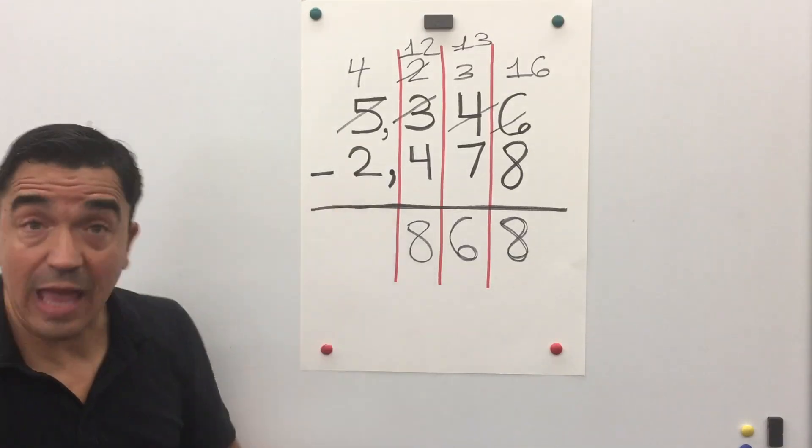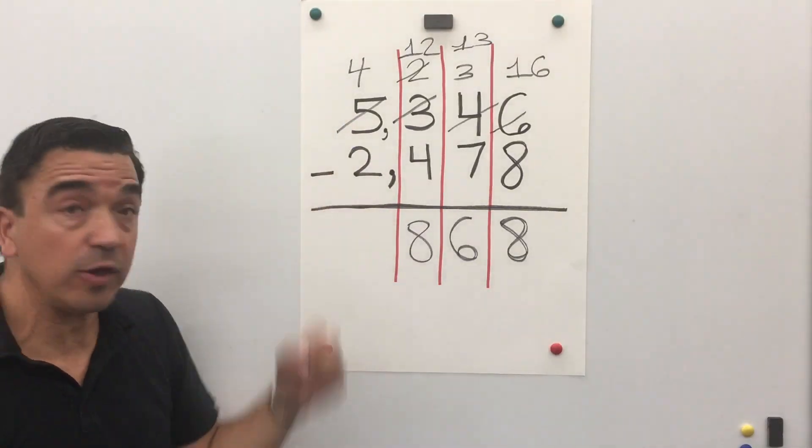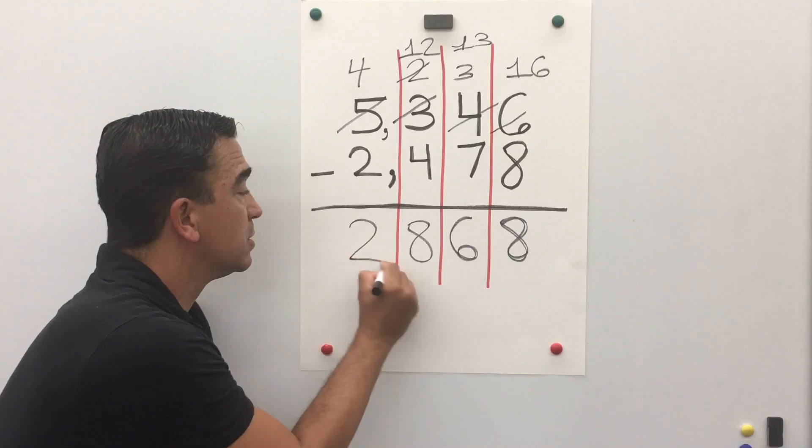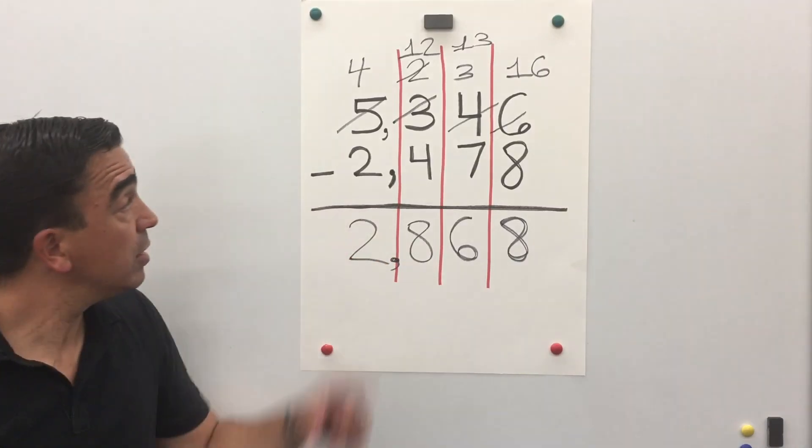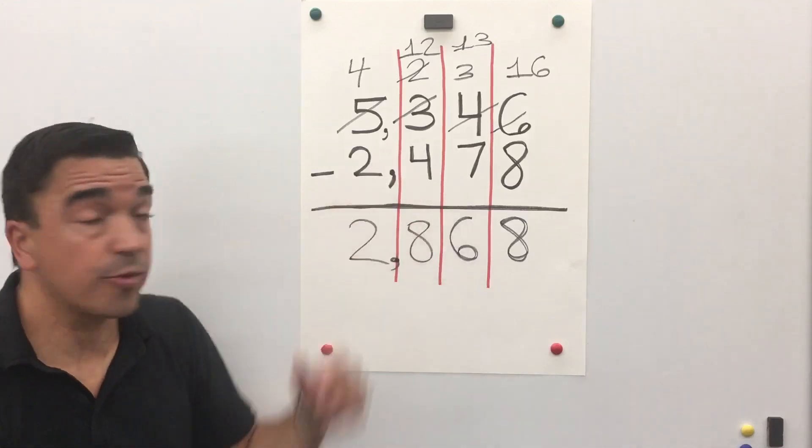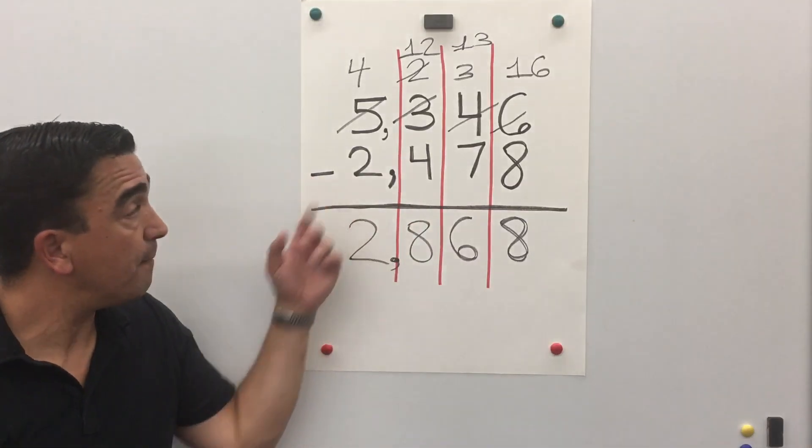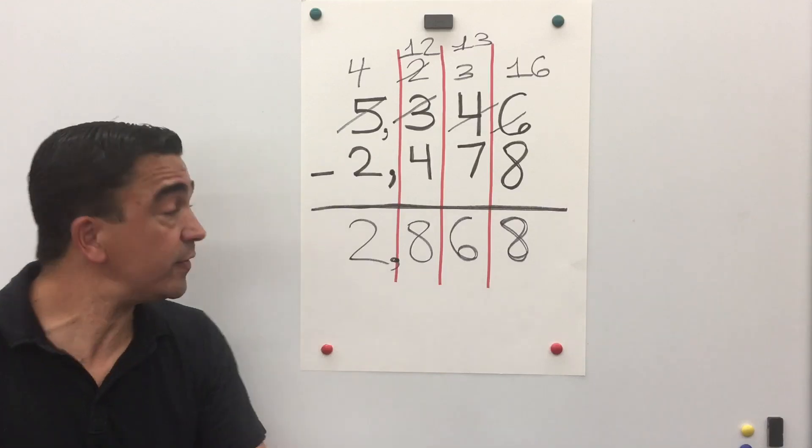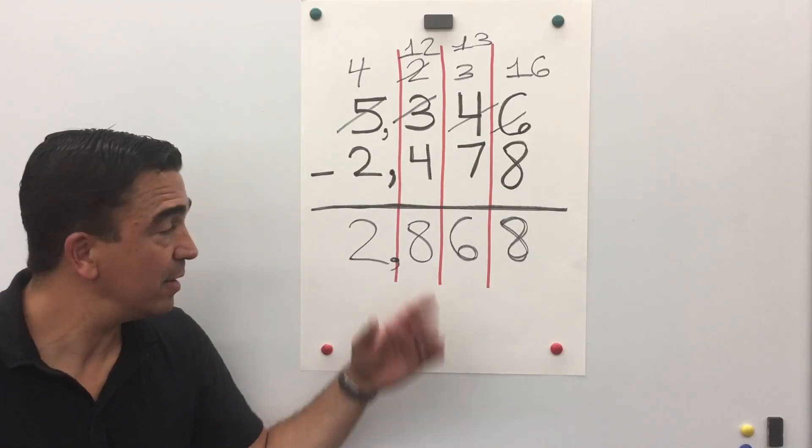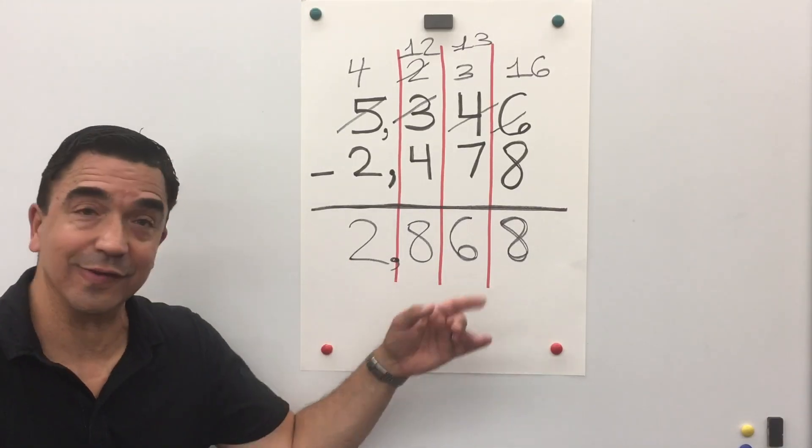And now in the thousands place, 4 minus 2 is 2. So, 5,346 minus 2,478 equals 2,868.